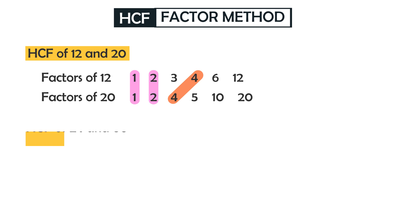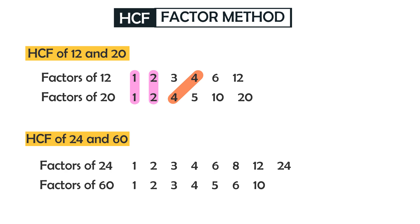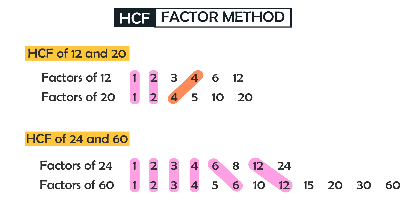Now let's find the HCF of 24 and 60. The factors of 24 are 1, 2, 3, 4, 6, 8, 12, and 24. The factors of 60 are 1, 2, 3, 4, 5, 6, 10, 12, 15, 20, 30, and 60. The common factors of 24 and 60 are 1, 2, 3, 4, 6, and 12. Among them, 12 is the highest. So the highest common factor of 24 and 60 is 12.